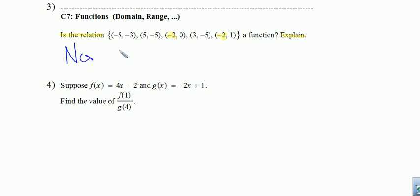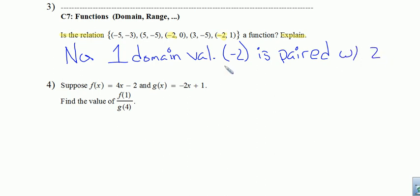So we're just going to say no, this is not a function. And the reason is, is we have one domain value. In this case, negative two is paired with two different range values. And we're good with that problem.